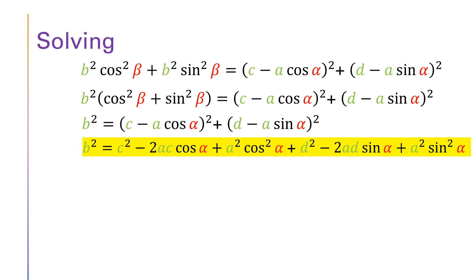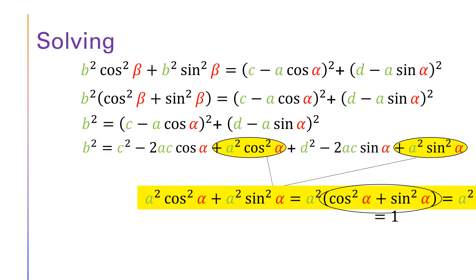Now let's work the right side. We can develop each bracket. The first bracket gives: c squared minus 2 times a times c times cosine alpha plus a squared times cosine squared alpha. Similarly, the second bracket gives: d squared minus 2 times a times d times sine alpha plus a squared times sine squared alpha.